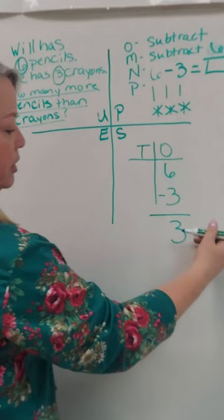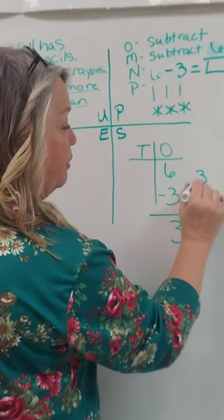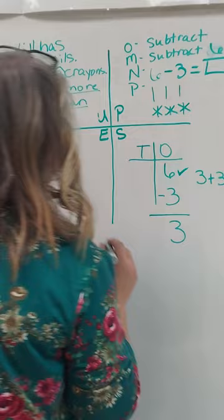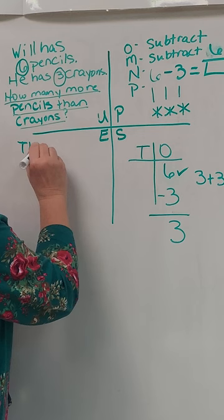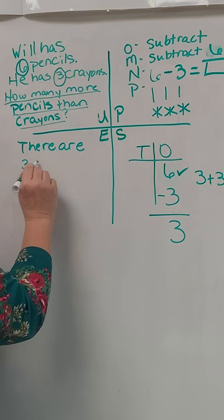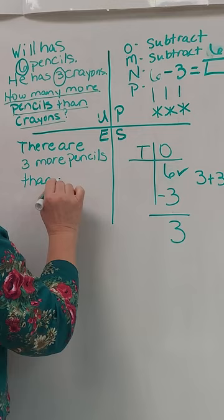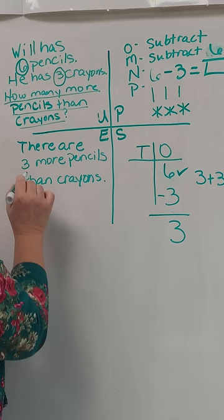How to check this is I'm going to take three plus three, and I should get this answer here. So I'm going to write three plus three equals six. One, two, three, four, five, six. Okay, so this is a check and this is a check. Our evaluation on that is there are three more pencils than crayons. So three more pencils than crayons.